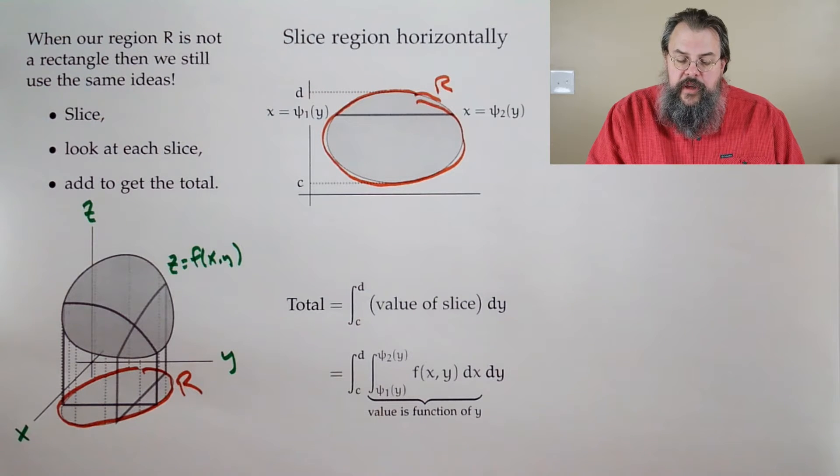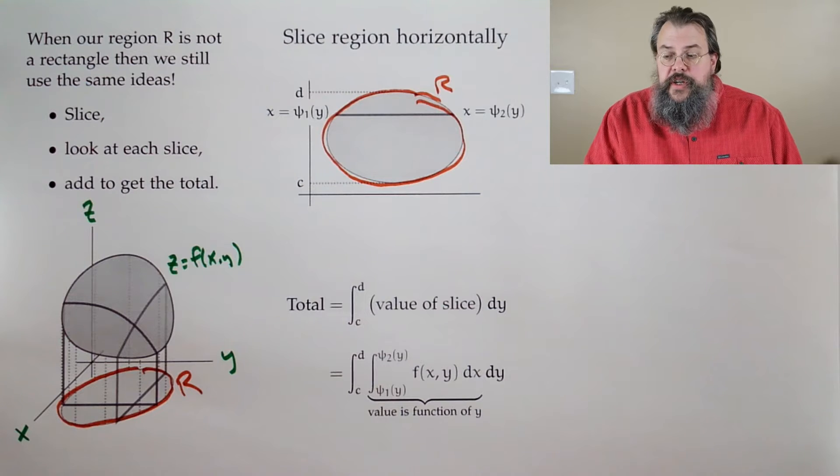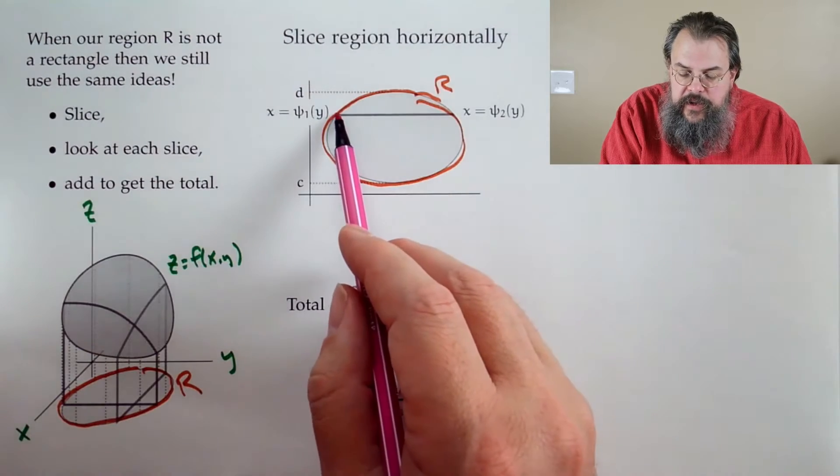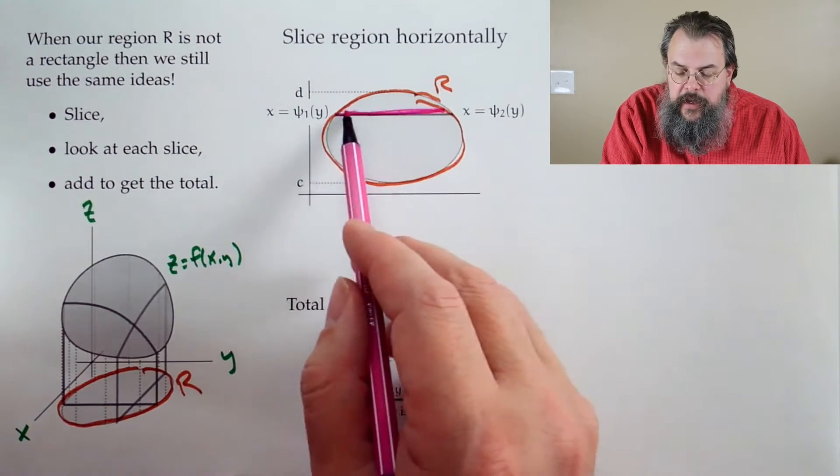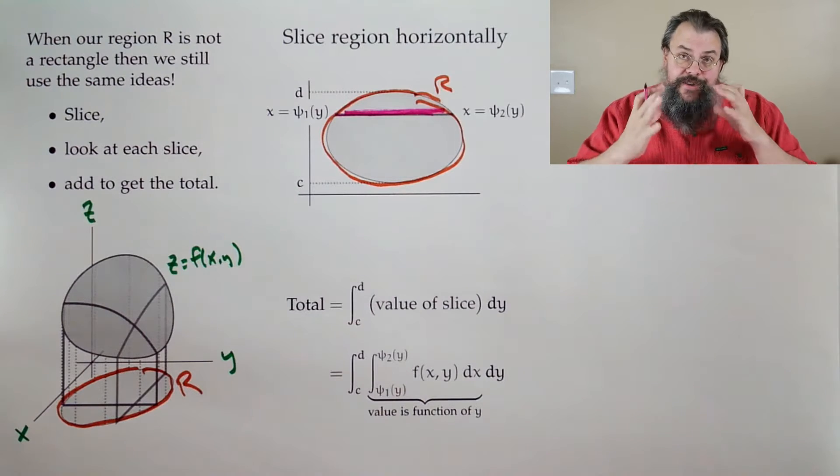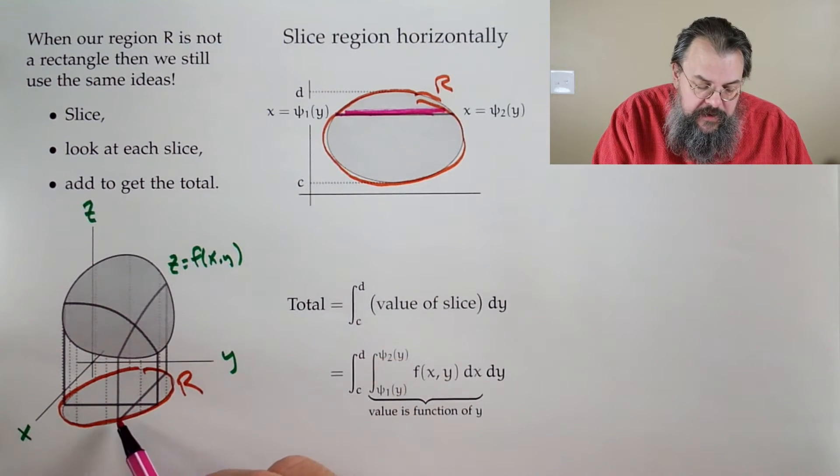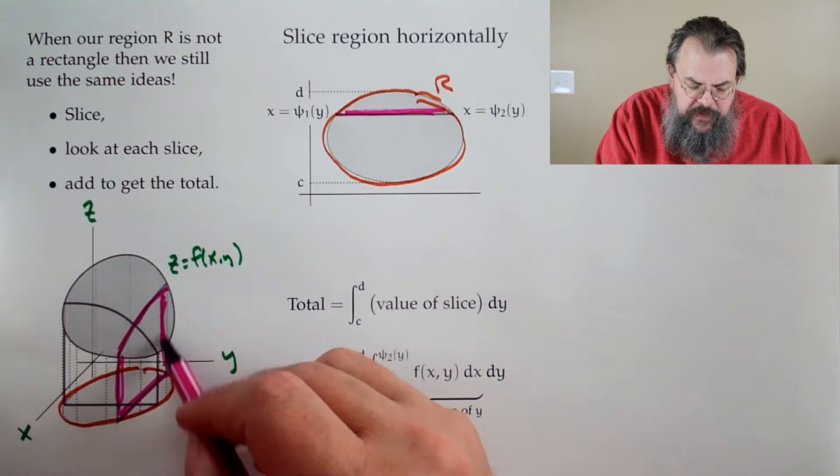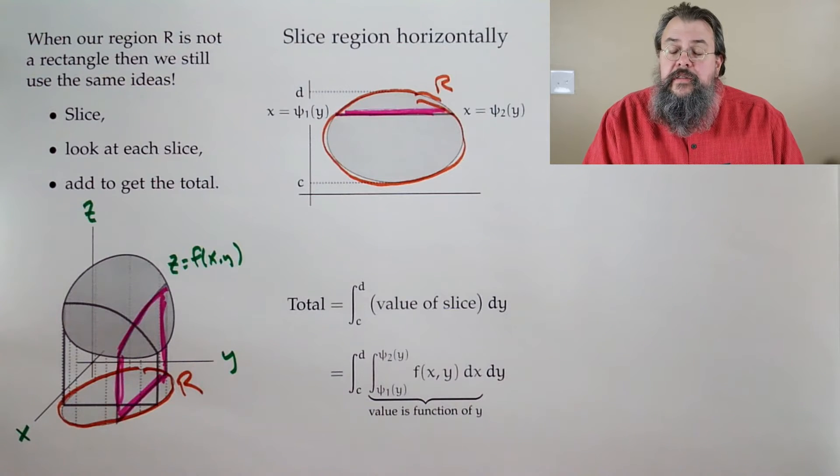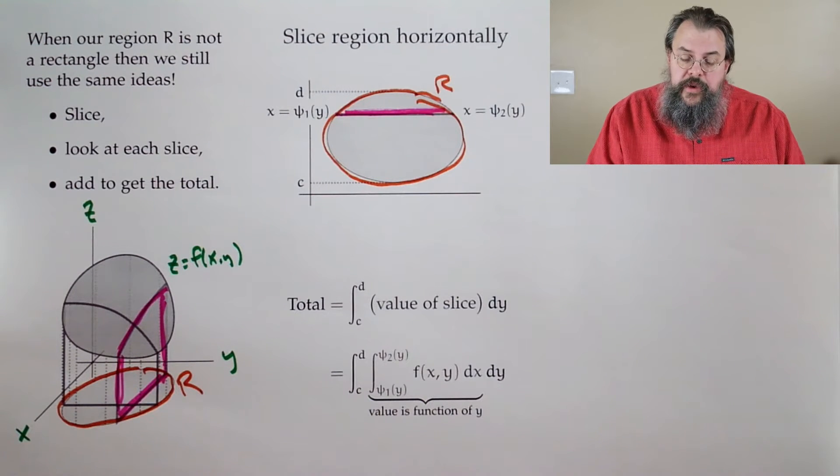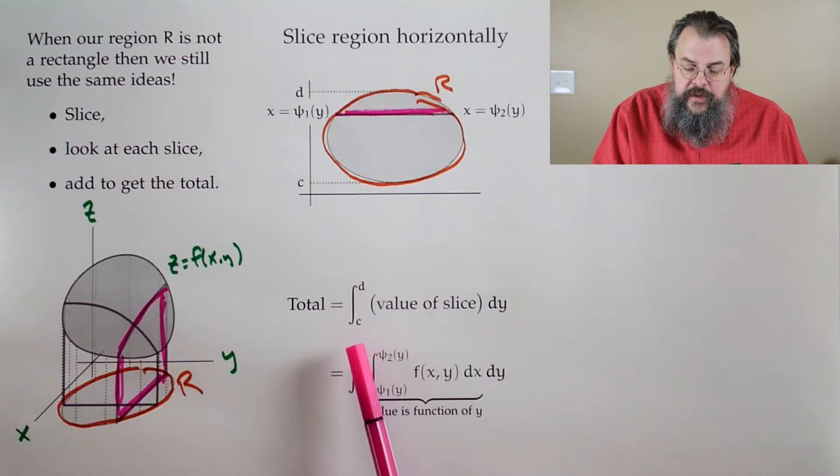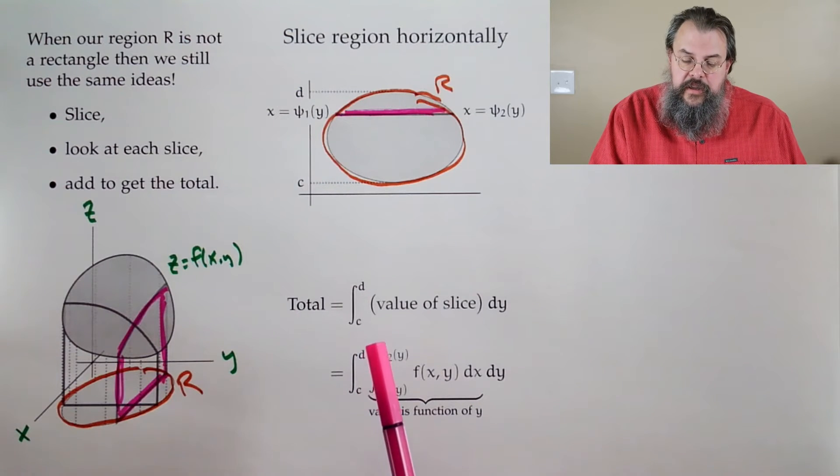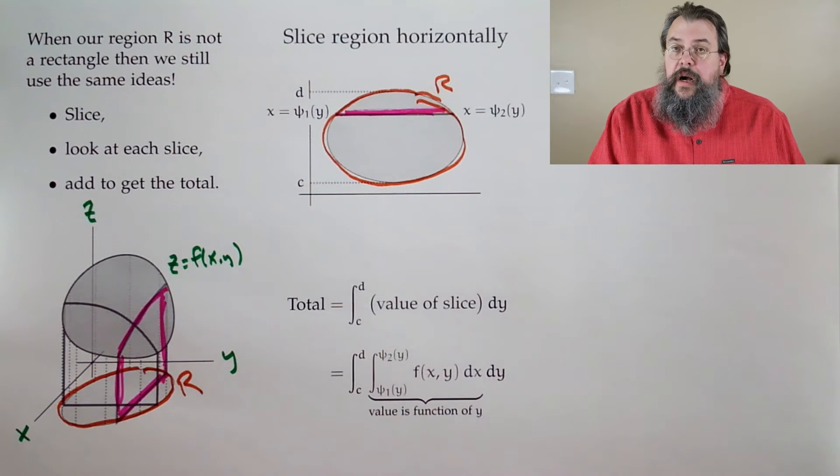Well, the idea of integration says, look, let's break things into pieces. For us, we slice, we look at each slice, and we add things up to get the total. Okay, so how do we do it? Well, we say, suppose we have our region R. And this is our region.